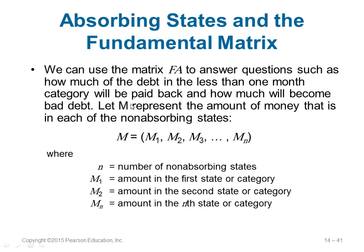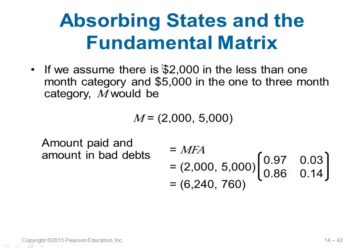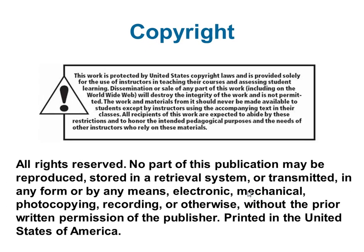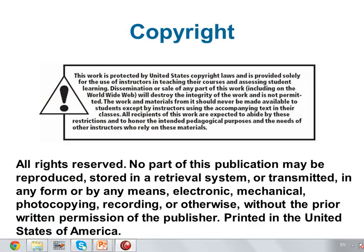We can use the FA matrix to answer many questions about how much will be recovered or end up in bad debt. M represents the amount of money in each non-absorbing state — M equals M 1, M 2, until M N. For example, if you have 2000 dollars in the less-than-one-month category and 5000 in the one-to-three-months category, out of 7000 total, 6240 will eventually be paid and 760 will be in bad debt. This ends our representation of Markov analysis.